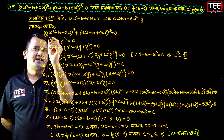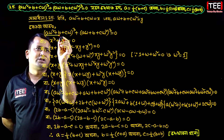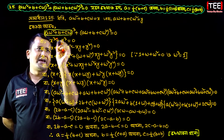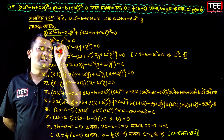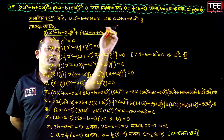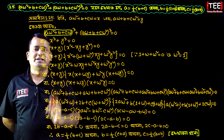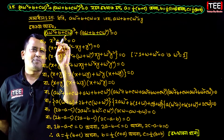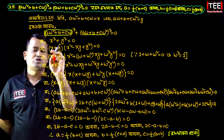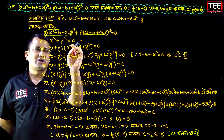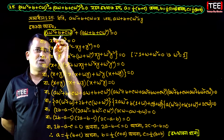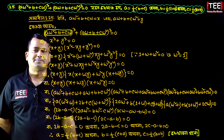So eta equal to x. For eta cubed, we take the cube. And for y, we take the cube as well. Now, a cube plus b cube can be written as a plus b into a squared minus ab plus b squared.